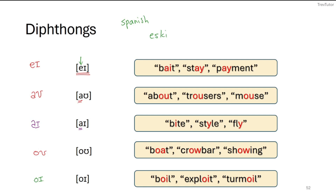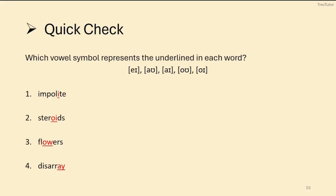We don't have formal descriptions for diphthongs the way we do for simple vowels. Some linguists describe them by their first and second positions independently, but it's common practice to just call them diphthongs and identify where they start and end. For the check: 'impolite' has /aɪ/ — starts at 'ah' and transitions; 'steroids' has /ɔɪ/ — starts at the back, goes to the front; 'flowers' has /aʊ/; and 'disarray' has /eɪ/ — starts front mid and moves up slightly.